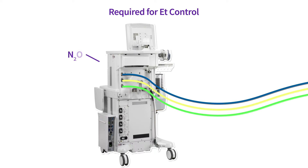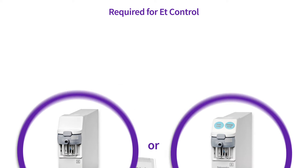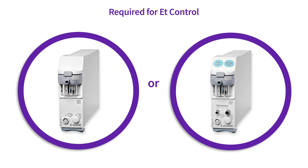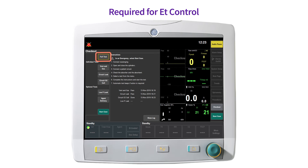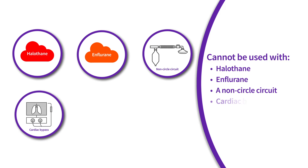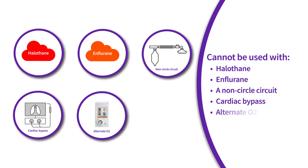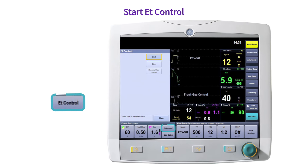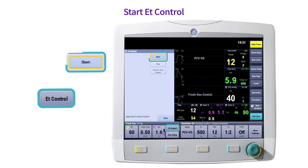The ACES CS2 anesthesia delivery system should have a supply of oxygen and balance gas to enter end-tidal control mode. A CARESCAPE airway module with end-tidal control capabilities should be installed and warmed up. A full test checkout should be completed prior to use. It is important to note that end-tidal control cannot be used with halothane, enflurane, a non-circle circuit, cardiac bypass, alternate O2, and air-only modes. To enter end-tidal control, select ET control from the fresh gas panel and select start.